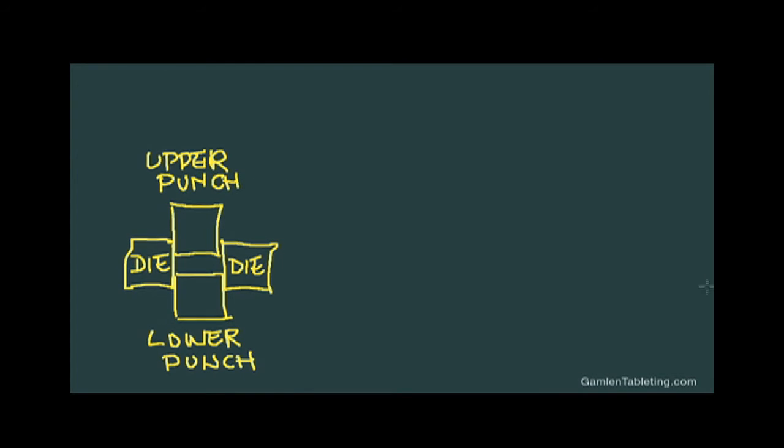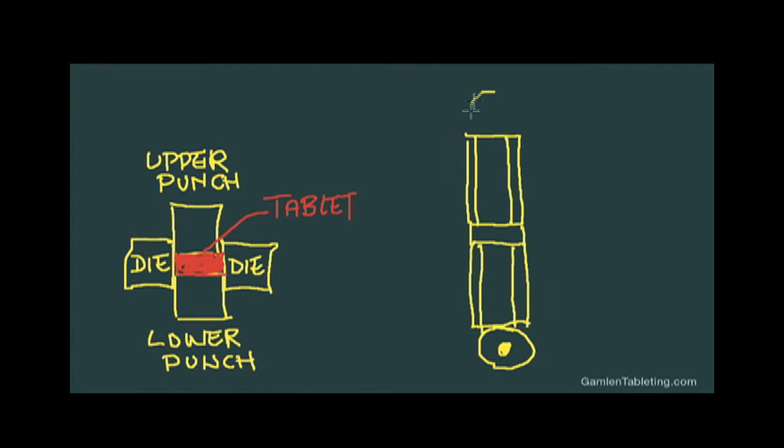Single punch and rotary presses work on a similar principle. They compress material to a particular thickness. On a single punch tablet press, thickness is determined by the upper punch position. On a rotary press, thickness is determined by the distance between the upper and lower compression rollers.